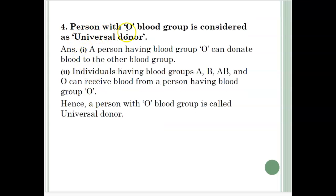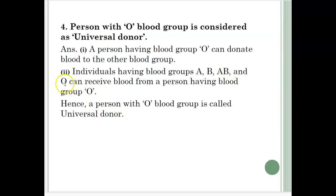Person with O blood group is considered as universal donor. A person having blood group O can donate blood to other blood groups. Individuals having blood groups A, B, AB and O can receive blood from a person having blood group O. Hence, a person with O blood group is called universal donor.